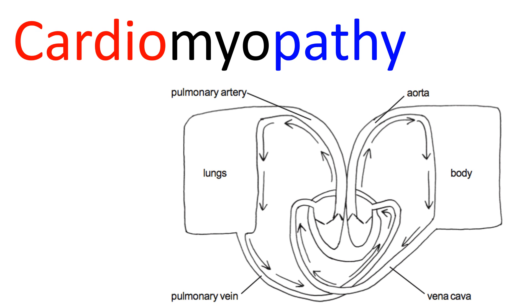This can occur chronically and can take a long time to develop. But you can also get acute cardiomyopathy — after viral infection, for example, you can get an acute cardiomyopathy if a virus has affected the myocardium. So: cardio — prefix; myo — the middle part; -pathy — the suffix. Cardiomyopathy.